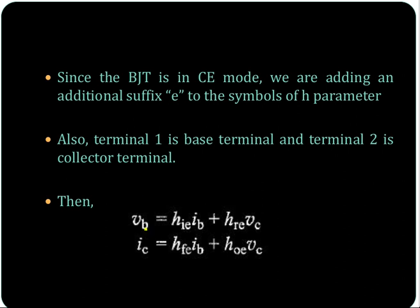That is, V1 is VB — the input base voltage. So VB is equal to HIE times IB — here HIE has the added suffix E indicating common emitter.